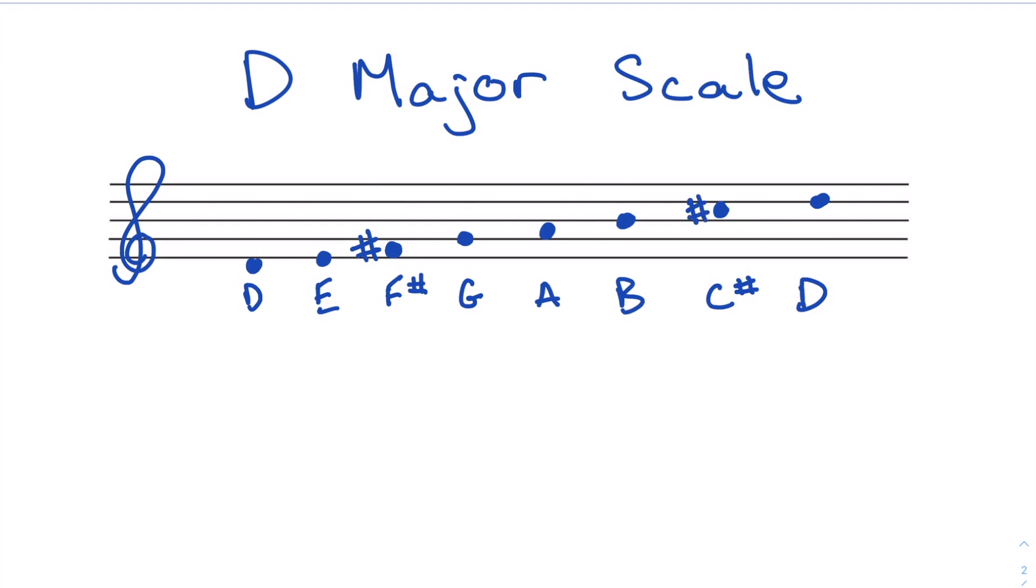So here I've got my D, E, F sharp, G, A, B, C sharp, D, and that's going to maintain our major scale formula, which is whole, whole, half, whole, whole, whole, half. And that's constructing major scales on the staff.